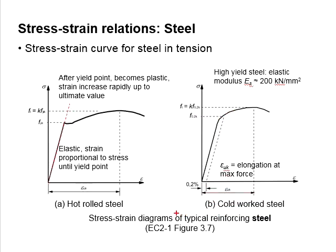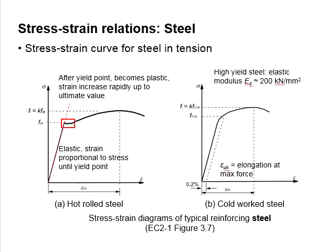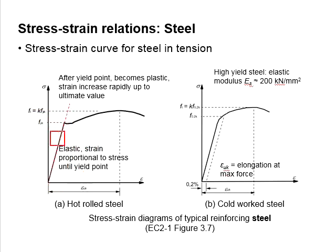The ultimate strength is represented by epsilon UK, and it corresponds with the ultimate tensile stress. Before the yield point, the stress develops proportionally to its strain. This region represents an elastic response of the stress-strain curve. Releasing the stress within any part of this region will lead to full recovery of the steel.